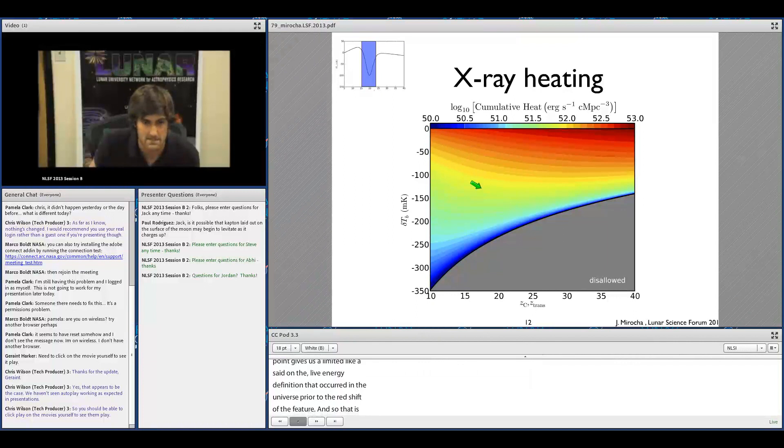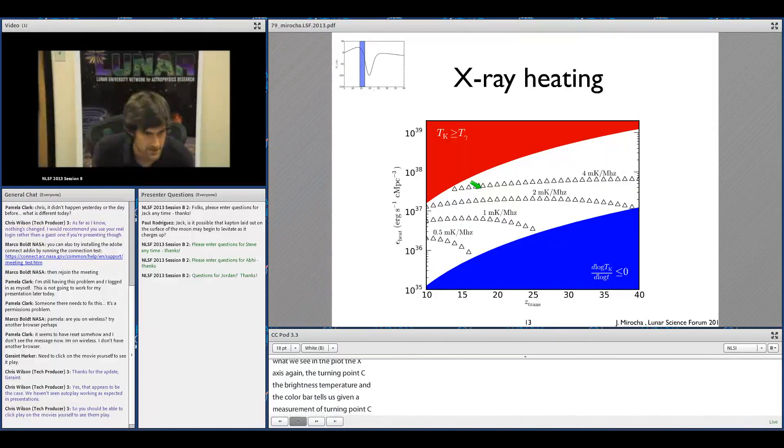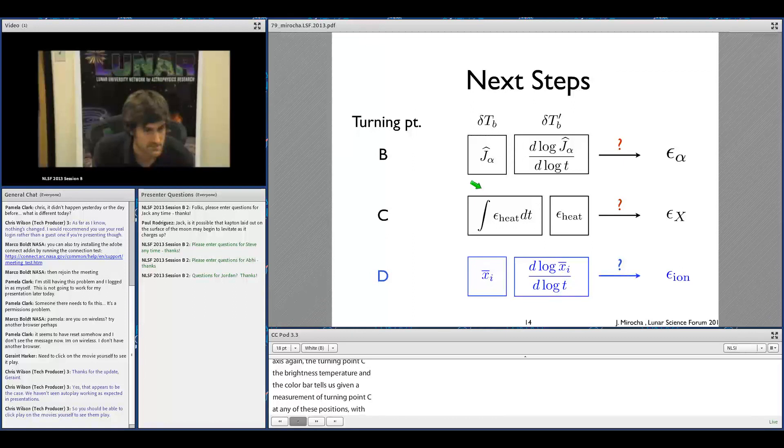Without making any assumptions about the functional form of how the heating rate density of the universe evolves with time, the position of turning point C gives us a limit on the cumulative energy deposition that's occurred in the universe prior to the redshift of this feature. That's what we're seeing in this plot - on the x-axis, the redshift of turning point C, on the y-axis its brightness temperature, and the color bar tells us, given a measurement of turning point C at any of these positions, what the cumulative energy deposition had been.